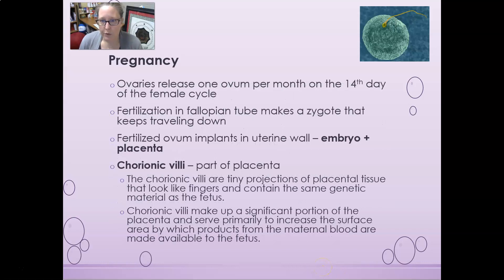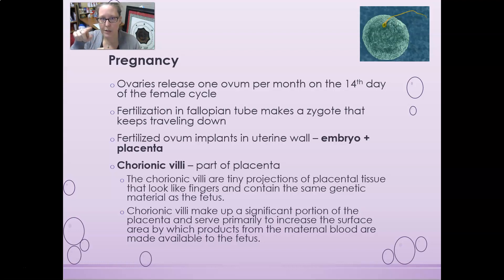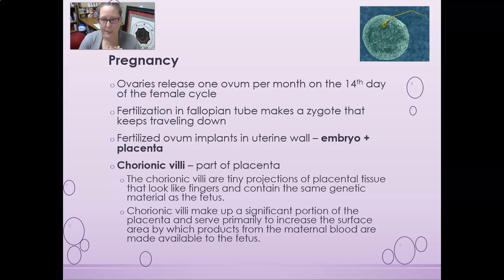Ovaries release one ovum per month on the 14th day of the female cycle. Fertilization occurs in the fallopian tube, making a zygote that keeps traveling down as the cells divide. It takes about a week for it to travel down the fallopian tube and enter the uterus, where it implants in the uterine wall and becomes an embryo.